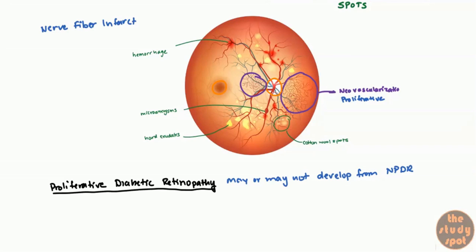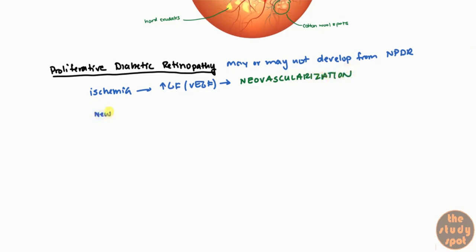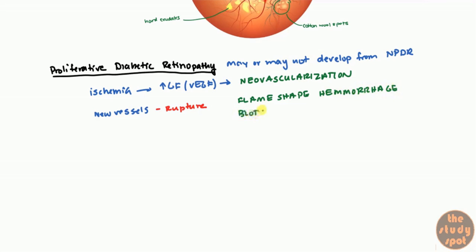What's going on in proliferative diabetic retinopathy? You're eventually getting ischemia, and because these tissues are becoming ischemic they're releasing growth factors, particularly VEGF, leading to neovascularization — those tortuous, thin, and narrow vessels seen earlier. When these new vessels rupture, they cause different types of hemorrhages: they can give you a flame-shaped hemorrhage or these types of pinpoint hemorrhages known as blot hemorrhages.